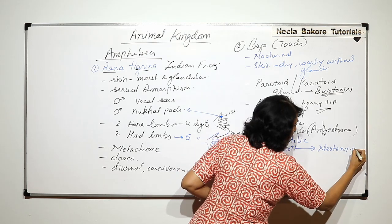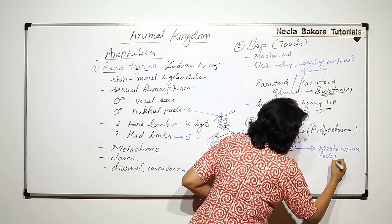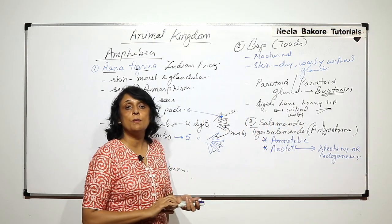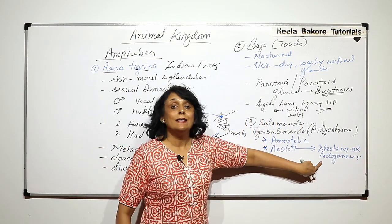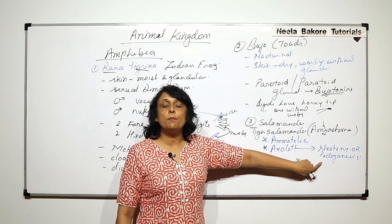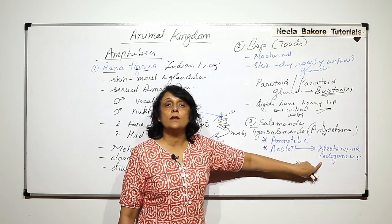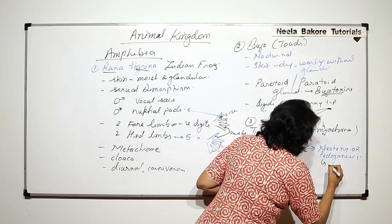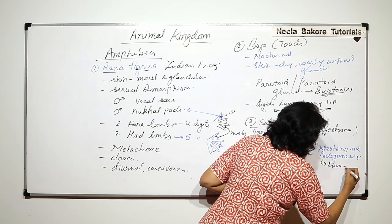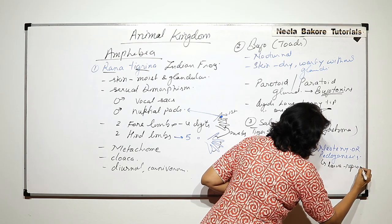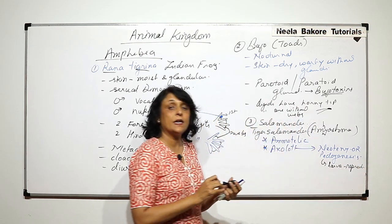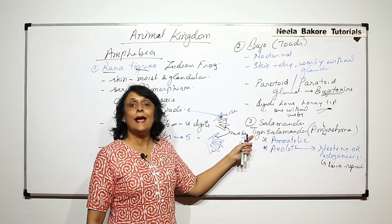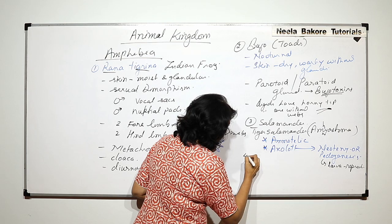Neoteny is also known as pedogenesis. Neoteny or pedogenesis means that the larvae can start reproducing because all sex organs are already developed. So this larva reproduces, which is a very unique feature of the tiger salamander.